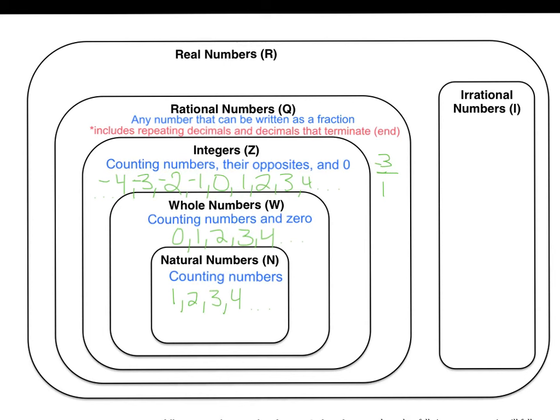Rational numbers include repeating decimals and decimals that terminate. What this means is if we have the number 0.6 repeating, since that could actually be written as the fraction two-thirds, it is in fact a rational number. Any repeating decimal and any number that terminates or ends eventually, even if it's a long decimal with many digits, are still rational numbers.